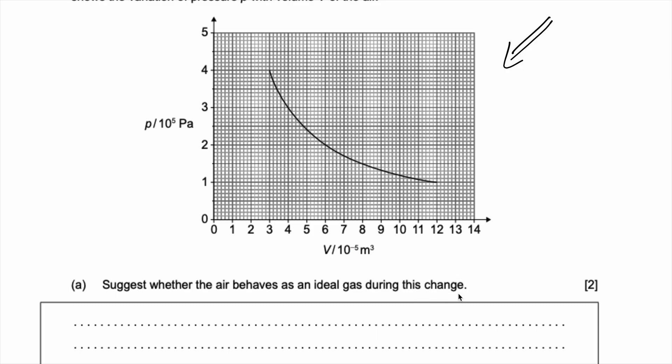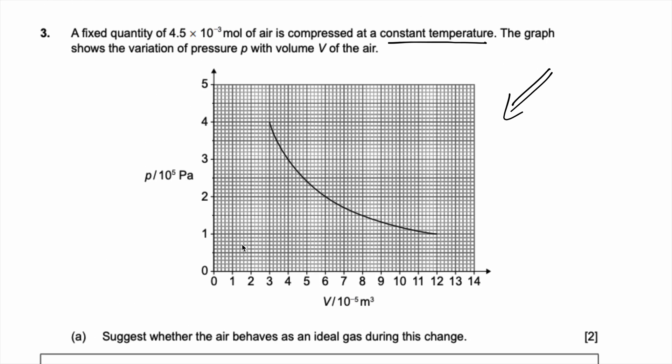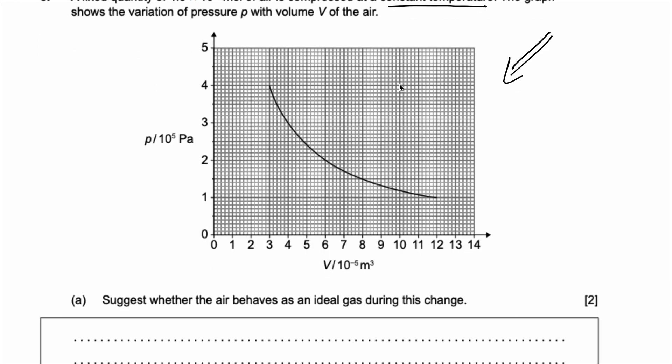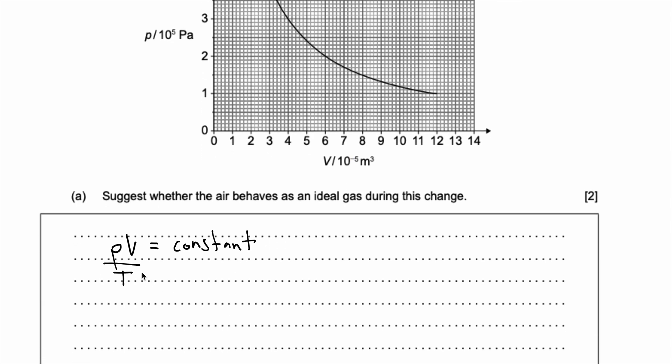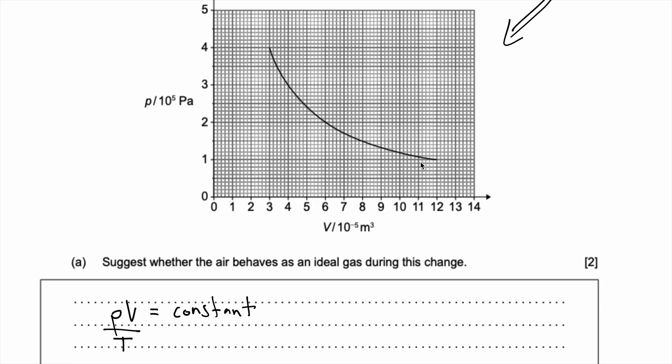So what do you know about an ideal gas? We know that already temperature is constant, so we know that PV must be equal to a constant. And I'm pretty sure in your data booklet you know that PV by T is a constant. And we know that T is already a constant, so in this case we only care about PV. So that's in your data booklet, and so we can say that PV by T is a constant, so we just need to figure out if PV at different stages on the graph are equal or not.